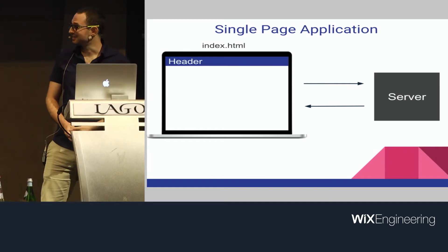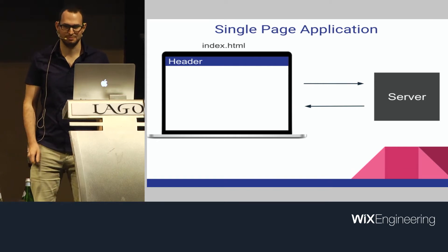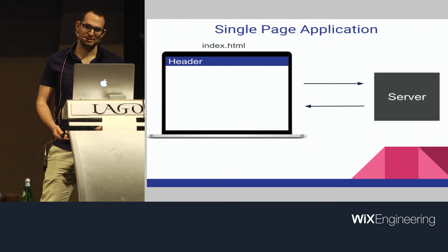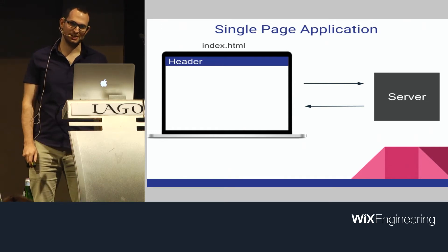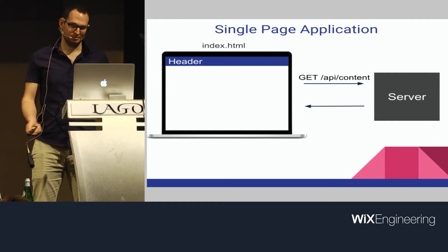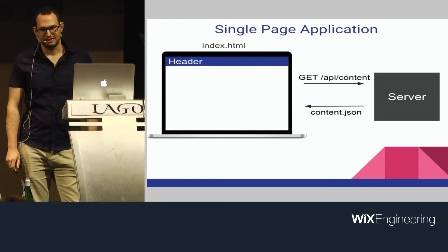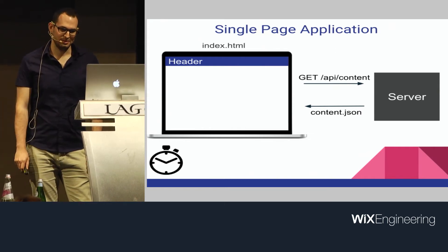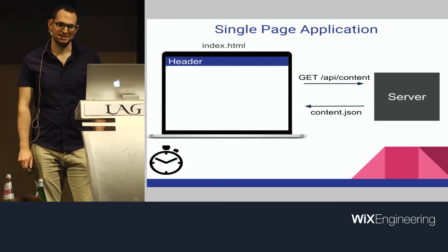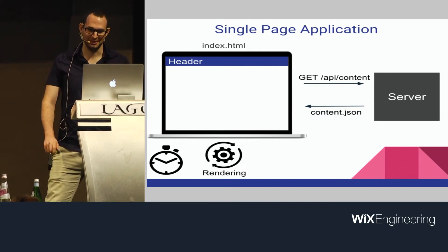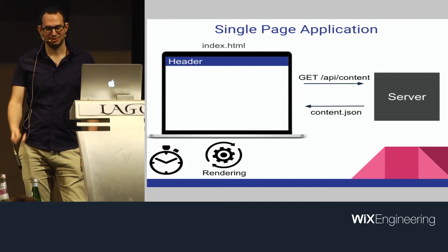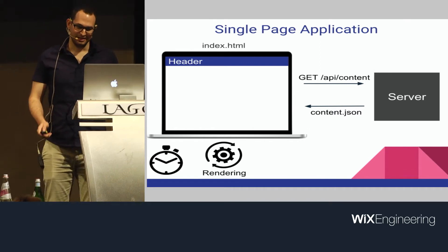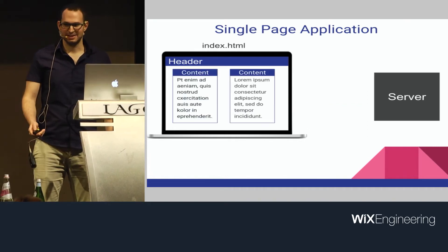When this rendering is done, we get something like a header, a spinner, or something basic — because the browser does not have all the dynamic data required to display content. So it goes and fetches that content, let's assume it's JSON, but it could be images or anything user-specific. When that arrives, we find ourselves waiting again for rendering. The browser has to generate the visual components using the data it just received. And when that's done, we finally get what we came for.